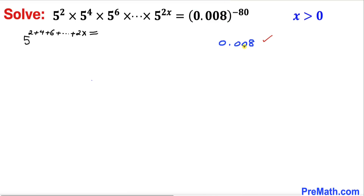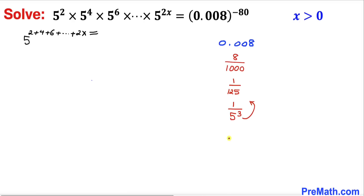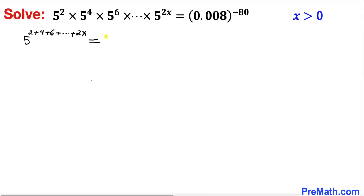Let's remove the decimal and put it in fraction form. 0.008 can be written as 8 divided by 1000, which reduces to 1 divided by 125. And 125 can be written as 5 to the power 3, so this becomes 1 divided by 5 to the power 3, which equals 5 to the power negative 3. Therefore the right hand side is 5 to the power negative 3, raised to the power negative 80.